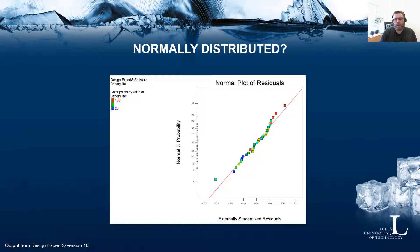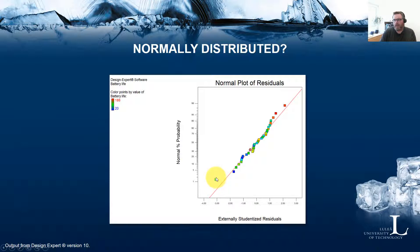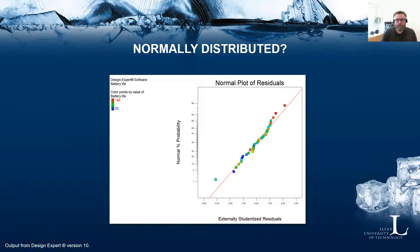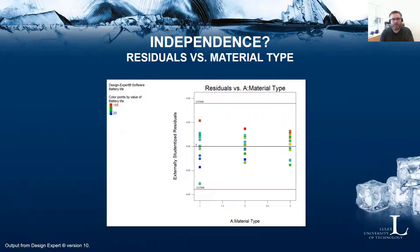Going back to the question of whether residuals are normally distributed or not: we have one of the residuals that deviates a bit from the line, but that's not really unusual — you can have one or two residuals that deviate. Overall it looks quite okay; we have a decent adherence to the normal line. I wouldn't be surprised if a formal test concluded these residuals are normally distributed. This is not an unusual plot.